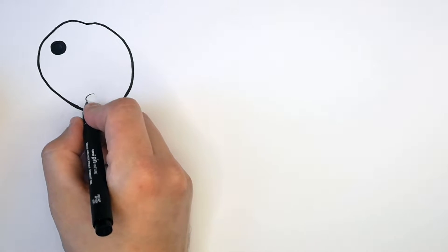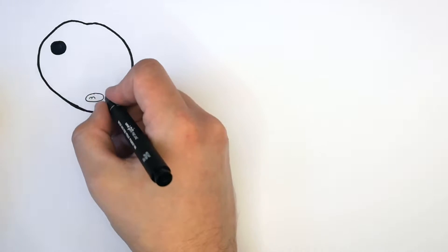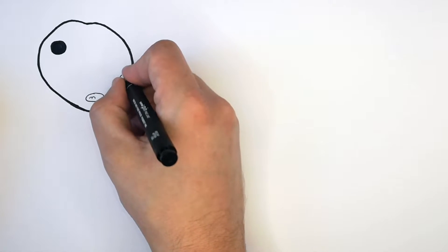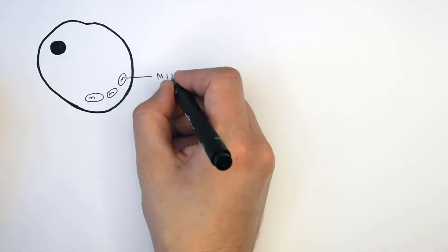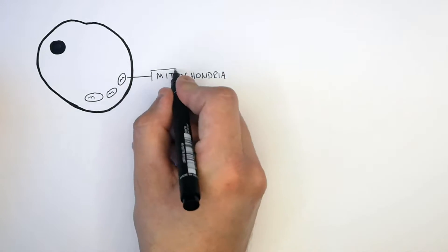it's an animal cell with a cell membrane, a nucleus, and also what I'm drawing now are the mitochondria. These are the mitochondria, the site of respiration in a cell.